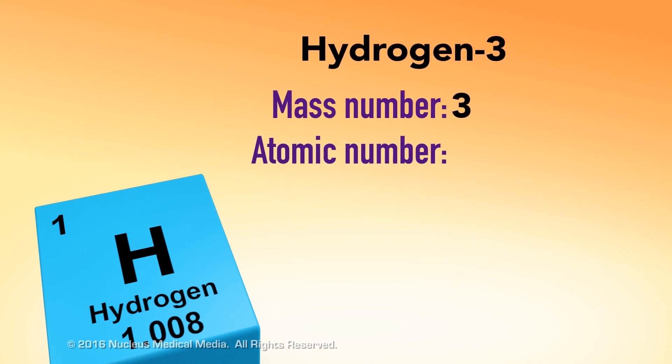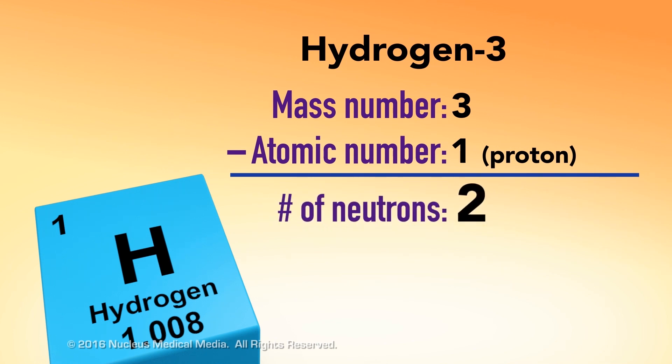so we know hydrogen 3's mass number is 3. So, we can subtract hydrogen's atomic number of 1 from its mass number and see that hydrogen 3 has 2 neutrons.